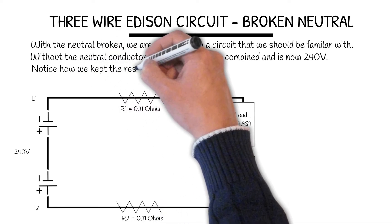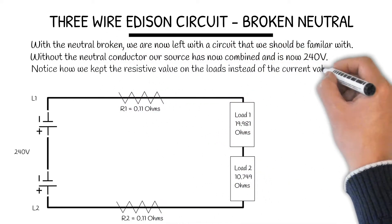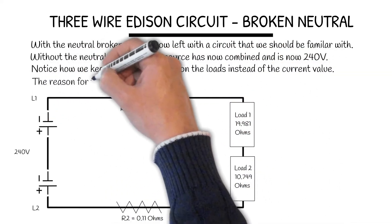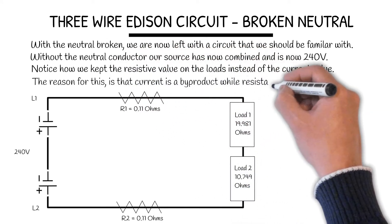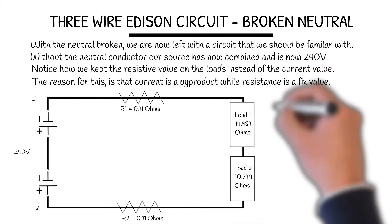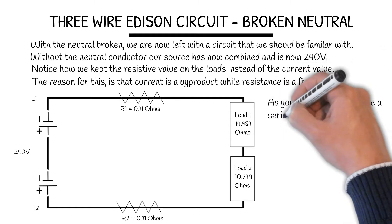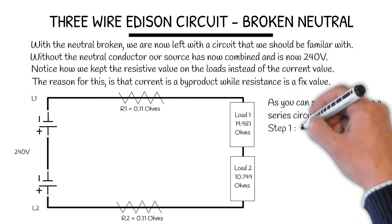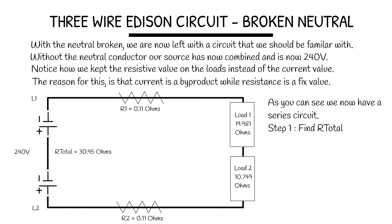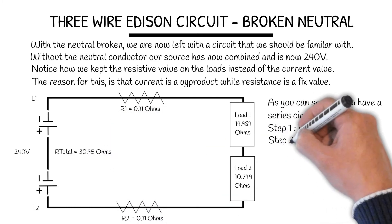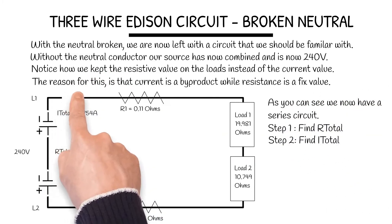Notice how we kept the resistive value on the load instead of the current value. The reason for this is that the current is a byproduct while the resistance is a fixed value. As you can see now, we have a series circuit. So to solve, we find RT for step 1. Next, we find IT by taking the source divided by RT.